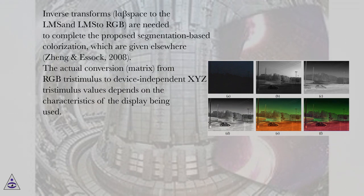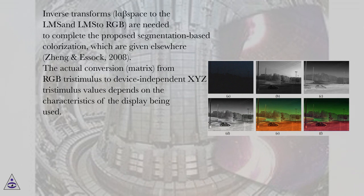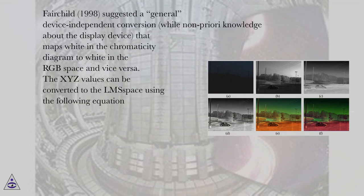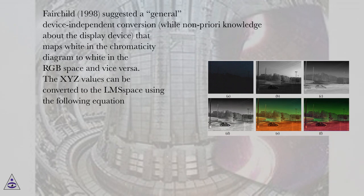Inverse transforms — from L-alpha-beta space to LMS, and from LMS to RGB — are needed to complete the proposed segmentation-based colorization, as given in Jung and Essek, 2008. The actual conversion matrix from RGB tristimulus to device-independent XYZ tristimulus values depends on the characteristics of the display being used. Fairchild (1998) suggested a general device-independent conversion while having no prior knowledge about the display device, that maps white in the chromaticity diagram to white in the RGB space and vice versa. The XYZ values can then be converted to the LMS space.